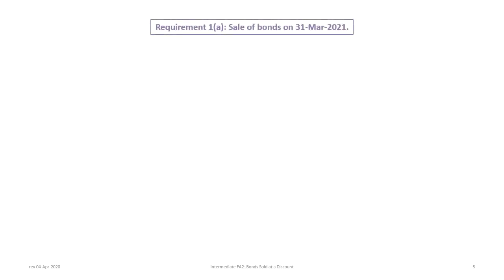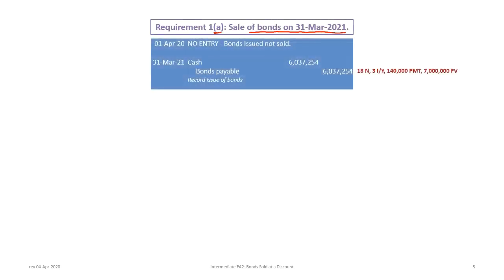For the first journal entry — requirement A — we record the sale of the bonds on March 31st, 2021. Note that on April 1st, 2020, there is no entry because the bonds were issued but not sold. To record the March 31st, 2021 sale, we simply debit cash and credit bond payable for the present value calculated using 18 periods, 3% interest, $140,000 payment, and $7 million future value.